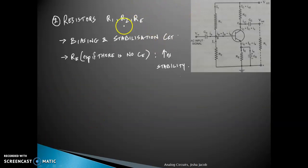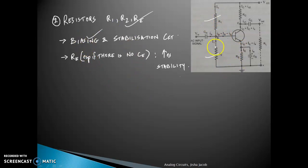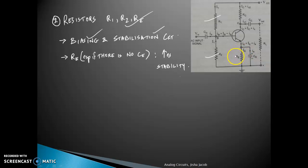Next are the resistors R1, R2, and R-E. R1 and R2 are needed mainly for biasing — to set the Q point. R-E is needed mainly for stabilization. If R-E is not present, the stability of the circuit is affected. A small voltage drop across R-E increases stability, which is why we keep R-E even though most AC current is bypassed through C-E.